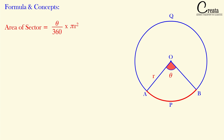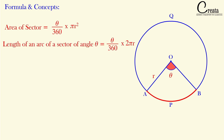The length of arc AB for angle theta is (theta / 360°) × 2πr. Here 2πr is the complete circumference of the circle, and for angle theta, the length of arc AB is (theta / 360°) × 2πr.